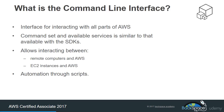The command line interface is an interface for interacting with all parts of Amazon Web Services. The command set and services available is similar to that available with the software development kits for developers — for example the JavaScript SDK or the Node.js SDK. It allows interacting between remote computers and AWS, and also allows for interacting EC2 instances and AWS, so you can SSH into an EC2 instance and issue CLI commands on your AWS services. It also allows for automation through scripting.